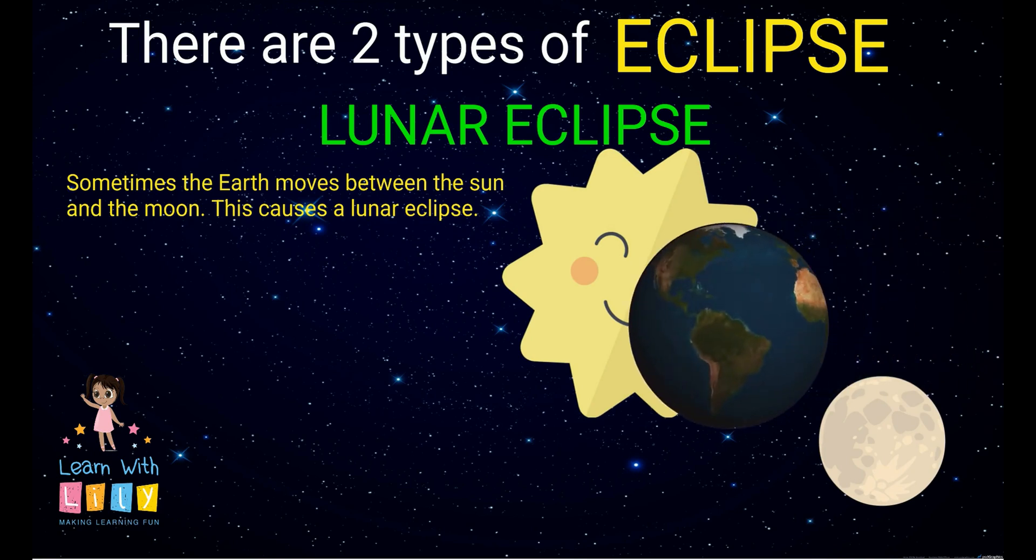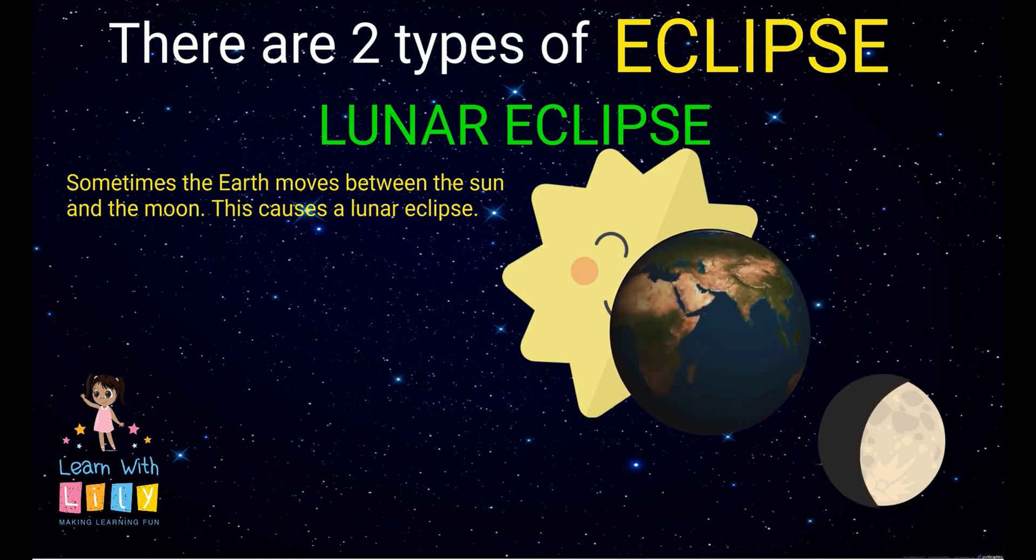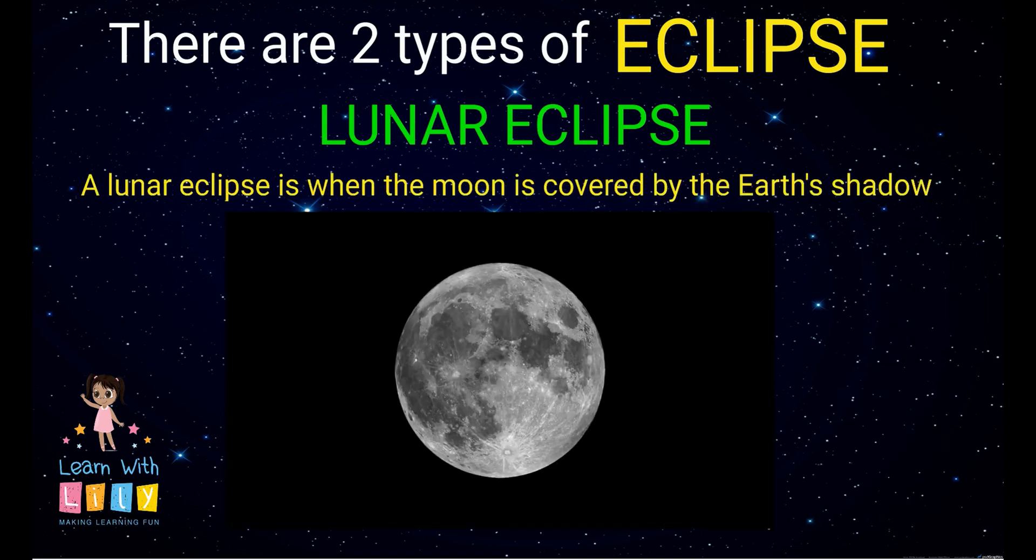So, what exactly is a lunar eclipse? What is it? Sometimes the Earth moves between the Sun and the Moon. This causes a lunar eclipse.